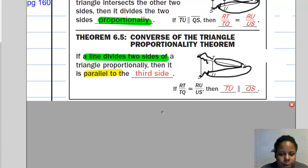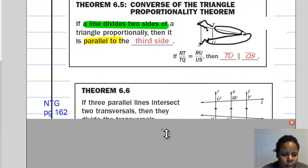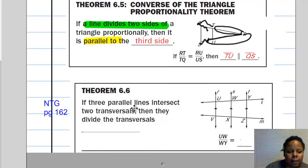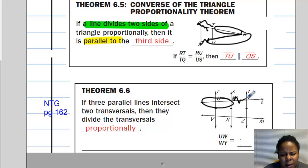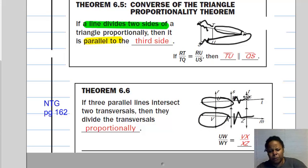So that brings us to our theorem, and I'm going to skip down for Theorem 6.6, which says if three parallel lines intersect two transversals, then they divide the transversals. Any ideas what it's going to be? If you said proportionally, you're absolutely correct. So over here, UW over WY, that ratio is also equal to, let's see if you said VX over XZ, you'd be absolutely correct. Even though the values for the side lengths are different, segment lengths are different, the ratios of the corresponding parts or partitions are actually equal.